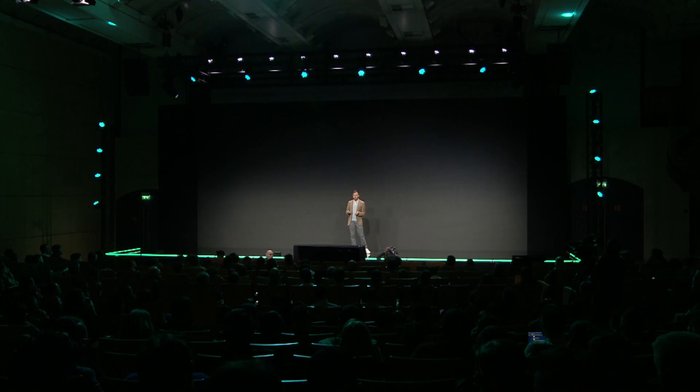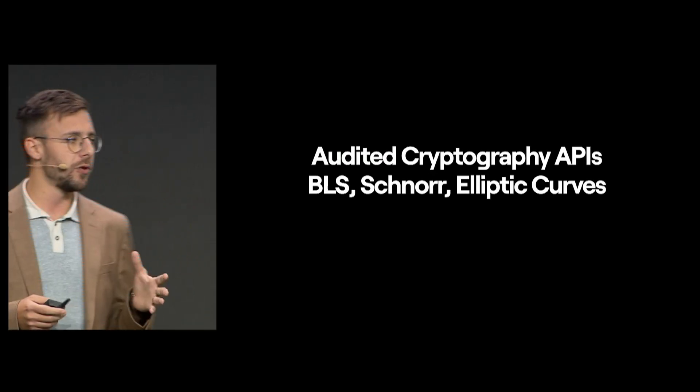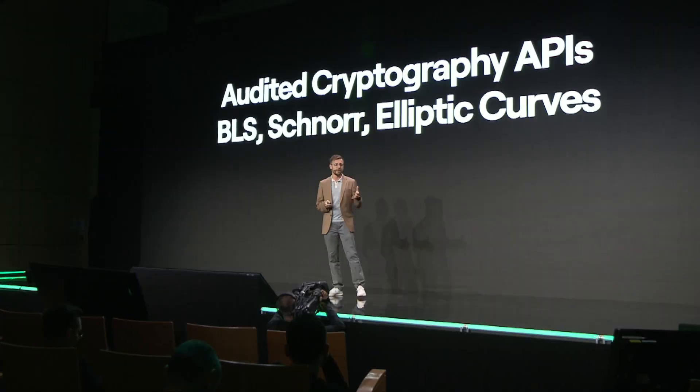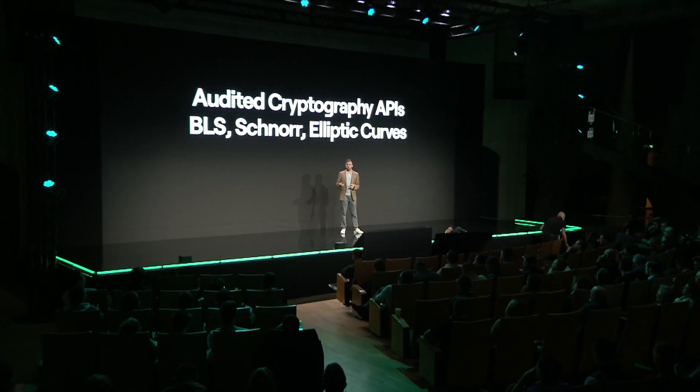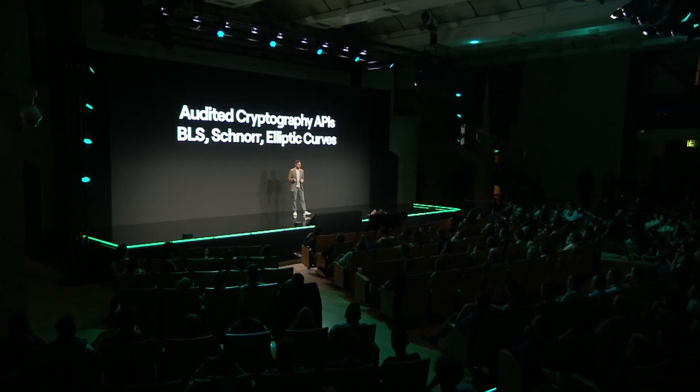A great example of the benefits of our composable architecture are our continuously improving cryptographic APIs. They use audited libraries for BLS, Schnorr, Edwards, and all the elliptic curve mathematics, which can be executed at native speed, as fast and efficient as possible, open to be used by any smart contract developer. Other blockchains use dedicated smart contracts to address this issue, meaning the results are slower and much more expensive. We are already working on integrating the newest libraries regarding threshold signatures and zero-knowledge proofs as well.